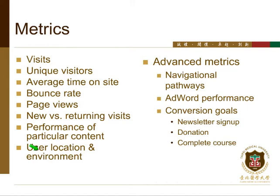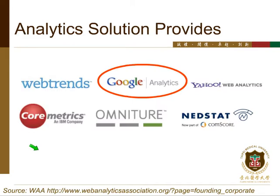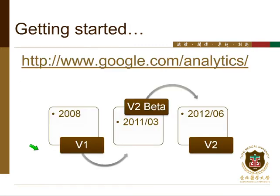There are also advanced metrics you can use. There are many analytics solution providers in the world — Webtrend, Omniture, and Google Analytics are three major ones. Webtrend and Omniture are installed on the server and calculate server logs. Google Analytics is a free cloud service from Google. You just need to set up an account, add it to your website, and Google will count everything for you.